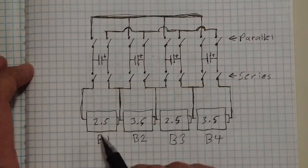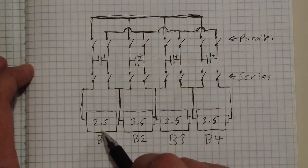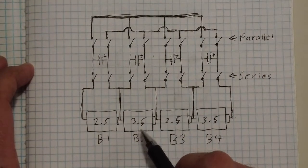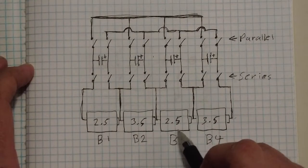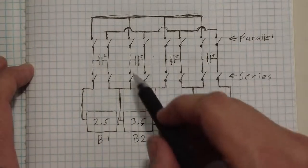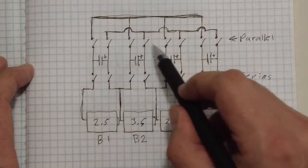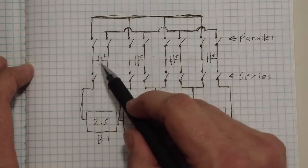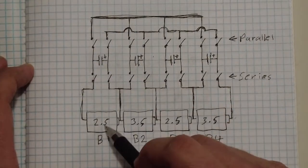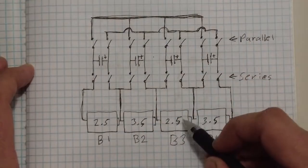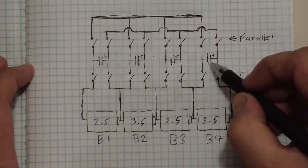So let's say that this cell is 2.5 volts. The cell adjacent to it is 3.5 volts, then 2.5, then 3.5. So when these parallel switches are open and then these close, these capacitors will charge up. So this one will charge up to 2.5, this one will charge up to 3.5, then 2.5, then 3.5.